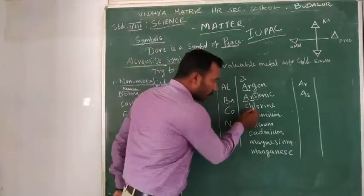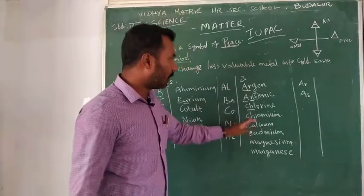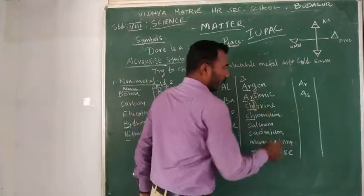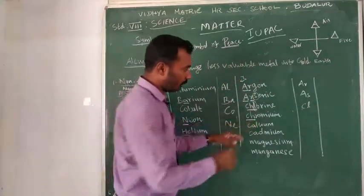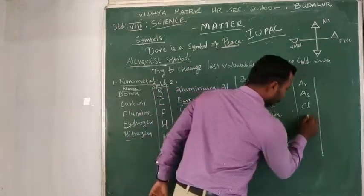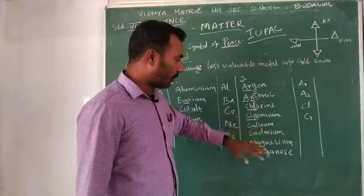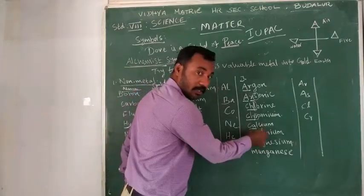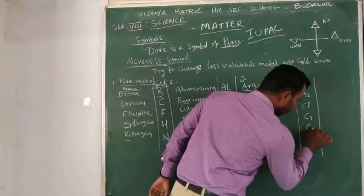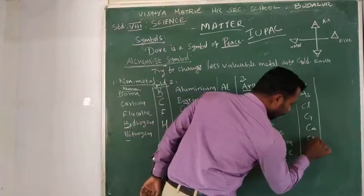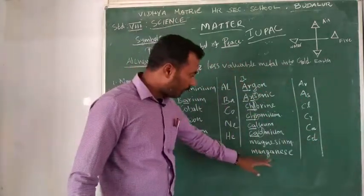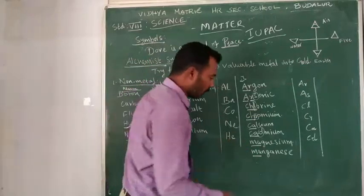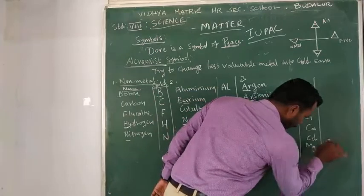Chlorine and chromium both start with Ch. Calcium and cadmium both start with Ca — so calcium is Ca and cadmium is Cd. Magnesium and manganese both start with Ma — magnesium is Mg and manganese is Mn.